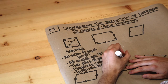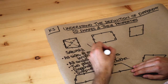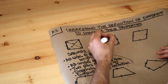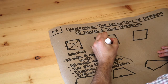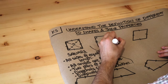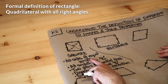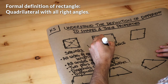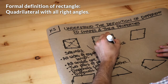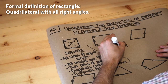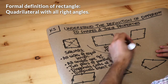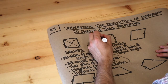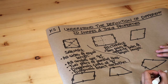Now, what about this shape here? This is a rectangle. Do all the sides have equal length? No. But we could say it has two pairs of opposite sides of equal length — that side is the same length as that opposite side, and that side is the same length as that one.